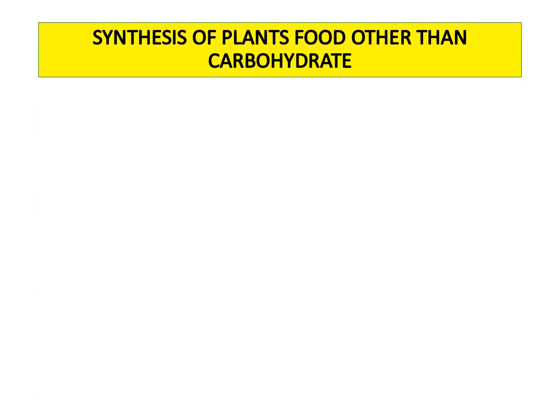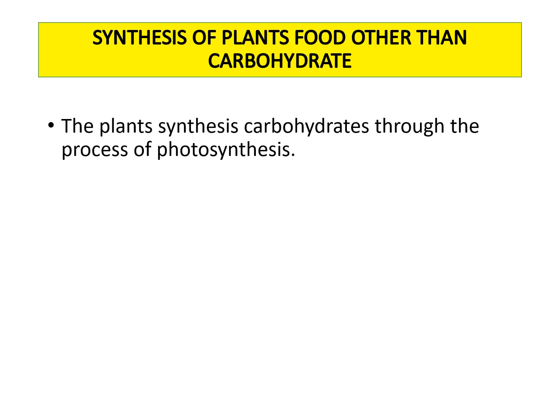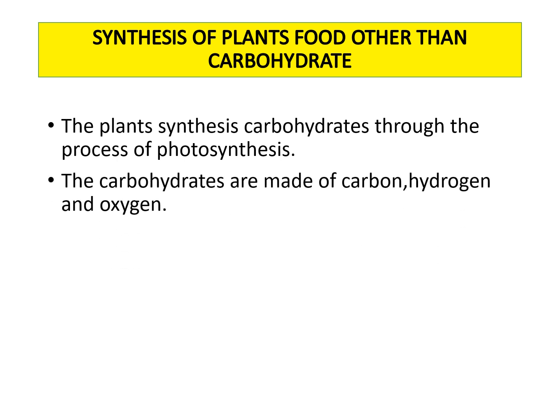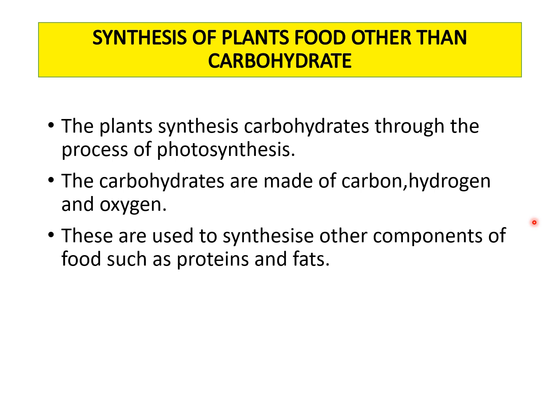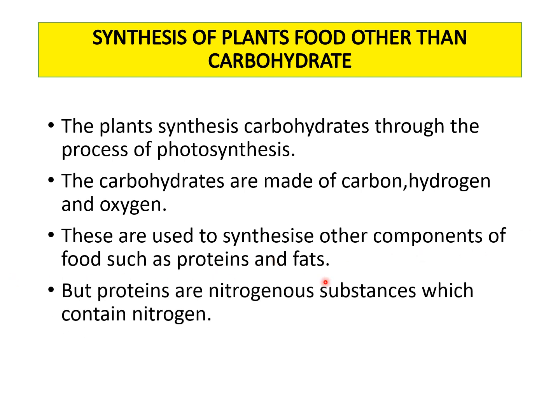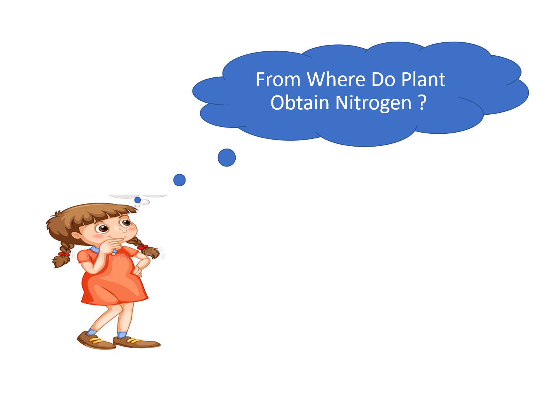As we learned in part 1, the product of photosynthesis is carbohydrates. Plants synthesize carbohydrates through photosynthesis, and carbohydrates are made up of carbon, hydrogen, and oxygen. These are used to synthesize other components of food such as fats and proteins. But proteins are nitrogenous substances that contain nitrogen — so how and from where do plants obtain nitrogen?